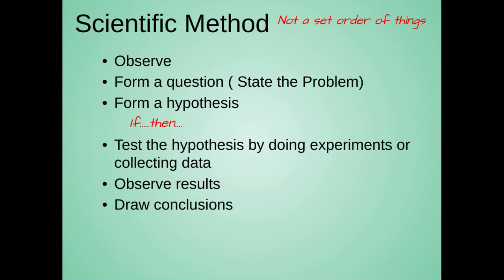The if-then statement is what you've been taught up until now. And then we test the hypothesis by doing experiments or by collecting data. Then we observe the results. We could go back and reform a different hypothesis and retest and re-observe results, or we can just go ahead and draw conclusions. So the scientific method, these steps are not set in stone. They're very circular.